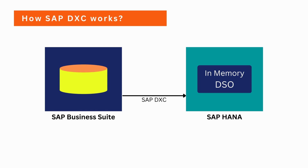For this data exchange, SAP DXC uses the HDDPS protocol. As you can see in the diagram, SAP HANA uses an in-memory data store object to capture the data from SAP Business Suite.